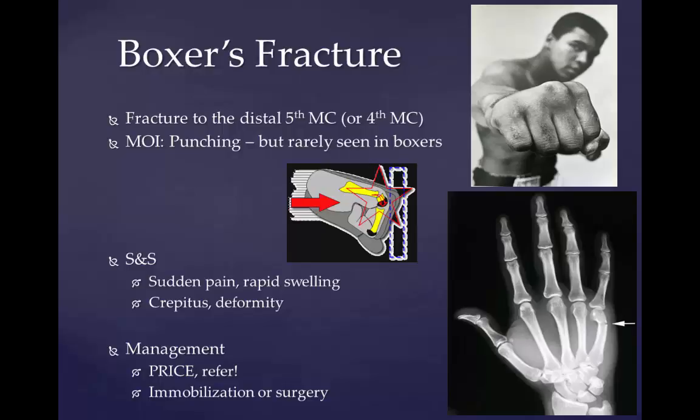A boxer's fracture is a colloquial term for a fracture of one or more metacarpal bones. Classically, the fracture occurs transversely across the neck of the bone after the patient strikes an object with a closed fist. Alternative names include scrapper's fracture or bar room fracture. Metacarpal fractures are usually caused by the impact of a clenched fist against a hard, immovable object using improper punching techniques. When a boxer punches with proper form, the knuckles of the second and third metacarpals align with the radius and humerus, allowing force to dissipate without injury. Therefore, fractures of the fourth and fifth metacarpals comprise the vast majority of metacarpal fractures.